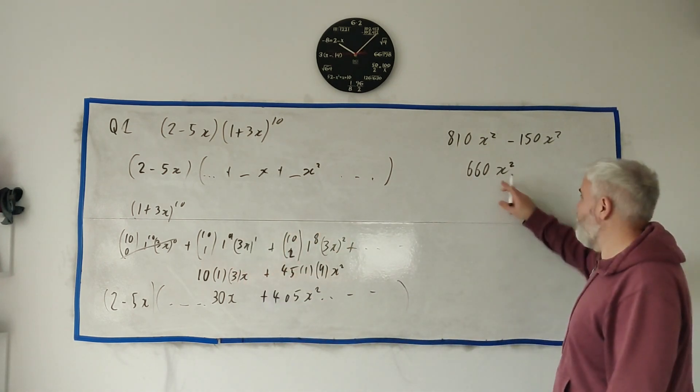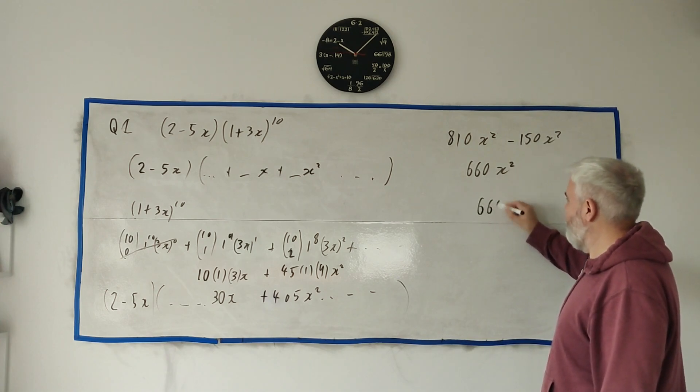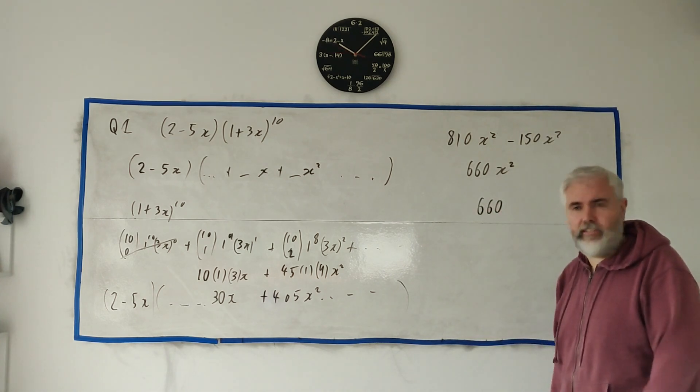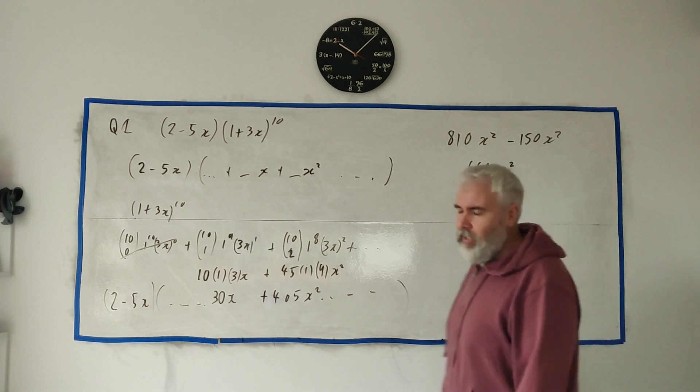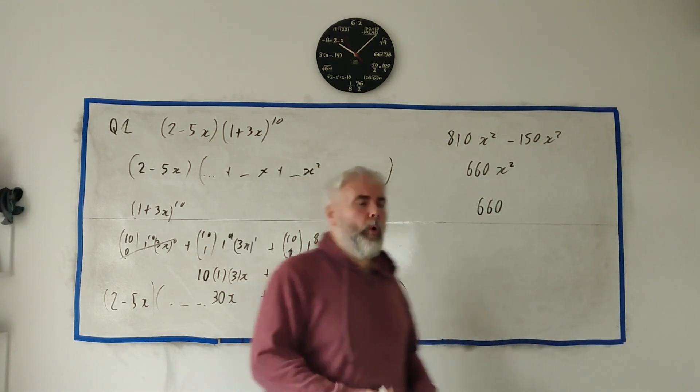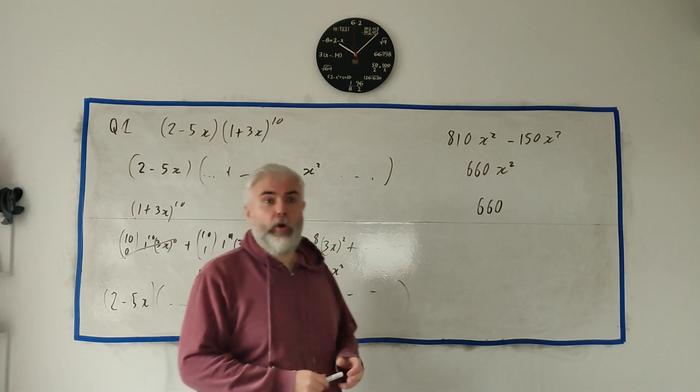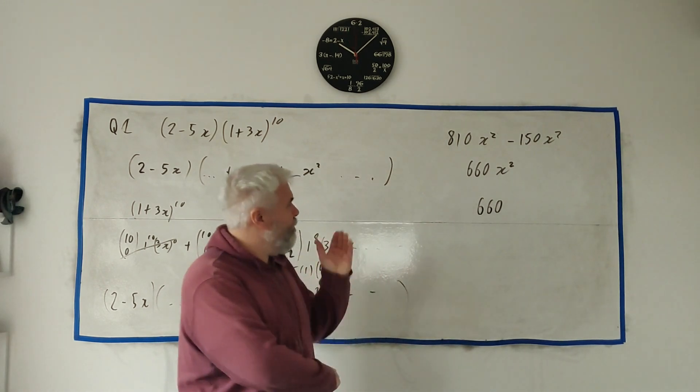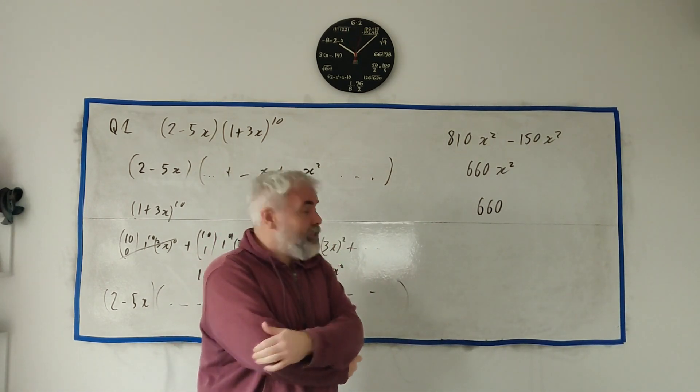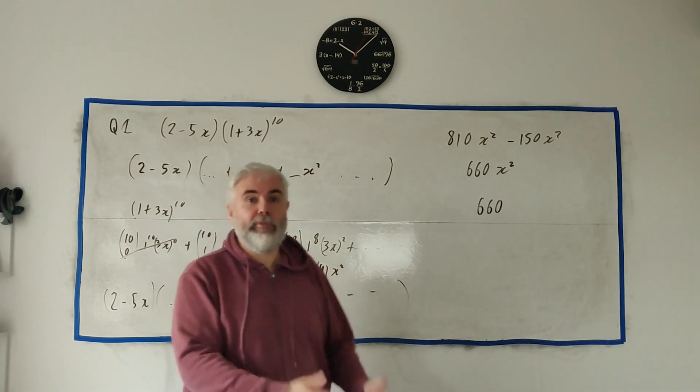And that's it. That's your answer, although they did ask for the coefficient, so I guess technically the full answer is just 660. I don't think you lose a mark for not separating that out. Okay, that's question one. That was a tricky binomial expansion, usually they're a bit more straightforward than that.